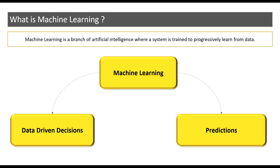Let us break down this definition a little further. When we say progressively learn from data, it essentially means recognizing the underlying patterns in the data. What is the use of recognizing underlying patterns in the data? There are broadly two uses: one is to derive data-driven decisions and the other one is to make predictions.